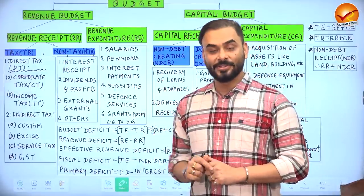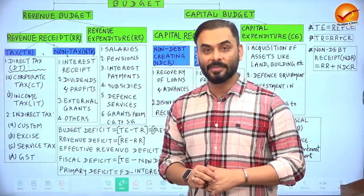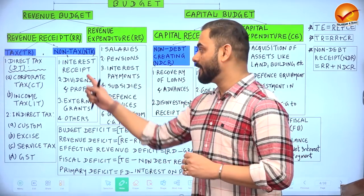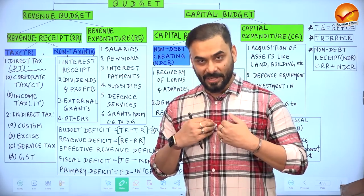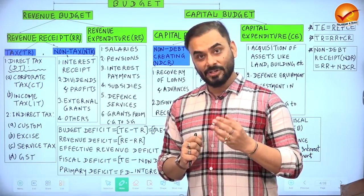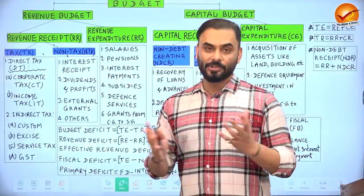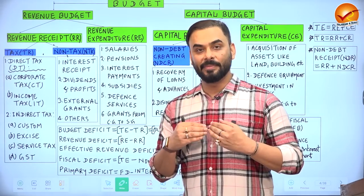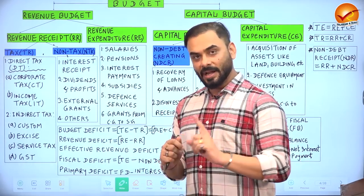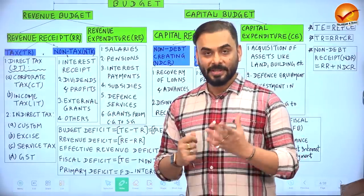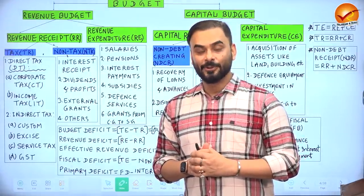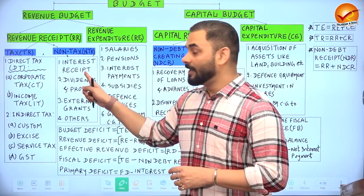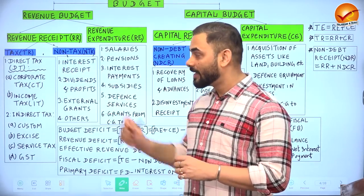Non-tax revenue includes interest income earned on loans given by the government, profits of public sector enterprises, grants from organizations like the UN during disasters, and revenue from fines and penalties. Tax revenue and non-tax revenue together are called revenue receipts.